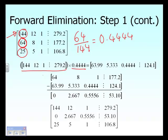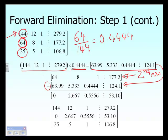We take the first row, multiply it by 0.4444, and subtract it from the second row. Due to rounding, we get 63.99 instead of exactly 64, but we treat it as zero. We replace the second row with the result of subtracting the multiple of the first row from it, accomplishing a zero in that position.